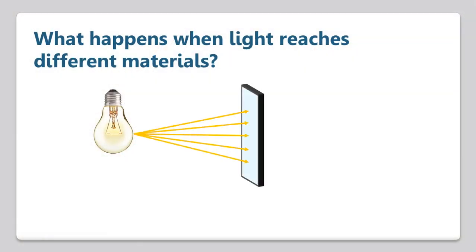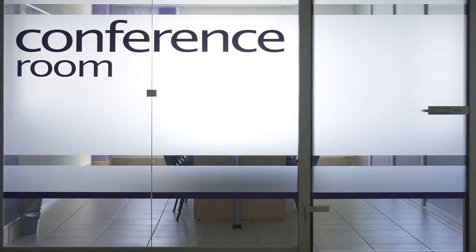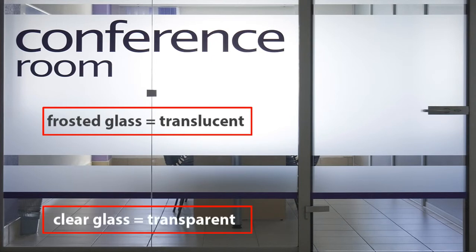When light strikes certain materials, some light is able to pass through, but the light gets a little scattered and is unable to stay on the original straight path. Some rays may even bounce back off the object. We call these types of materials translucent, which means to shine through. This conference room window really highlights the difference between transparent and translucent materials. The whitish frosted glass allows sunlight to pass through, but we can't make out any details — this glass is therefore translucent. The unfrosted glass, however, lets light pass directly through and we can clearly make out the objects behind the window, making it transparent.